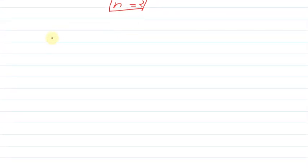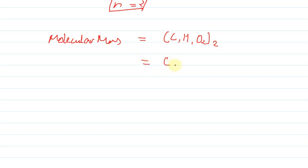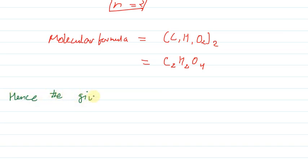When we put this value of N = 2 into the empirical formula C₁H₁O₂, we get the molecular formula C₂H₂O₄. This is our molecular formula — sorry, not molecular mass, this is our molecular formula. Hence, the molecular formula of the given compound is C₂H₂O₄. I hope you understood this solution. Thank you for watching.